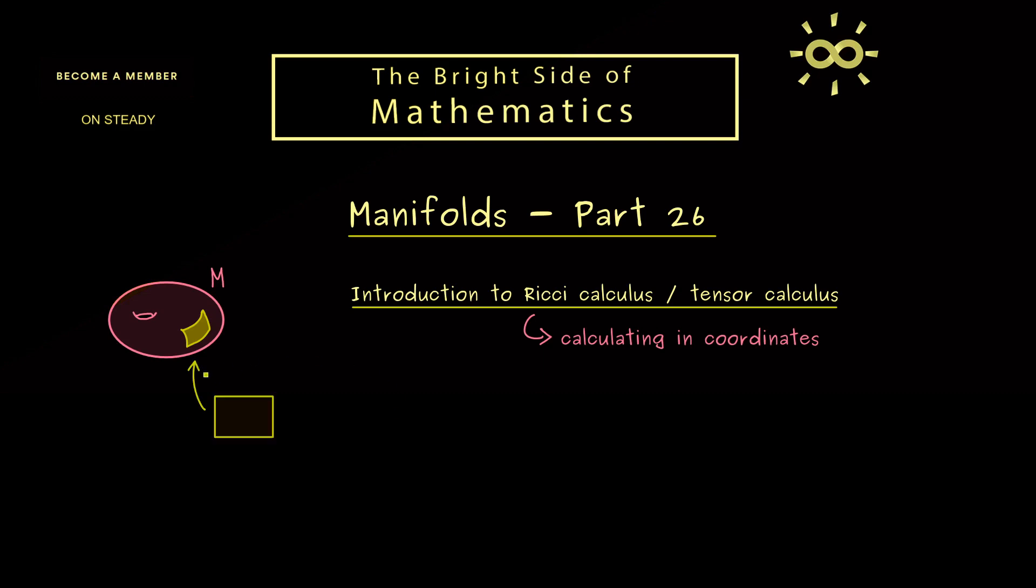So in short, you can remember the Ricci calculus or tensor calculus always deals with this lower level here. In particular, you can use n indices to denote the n coordinates you have here.